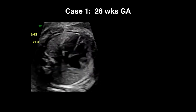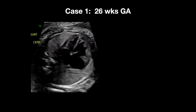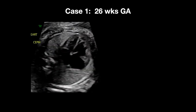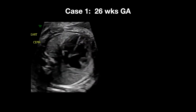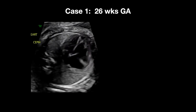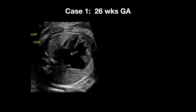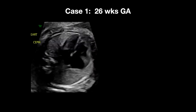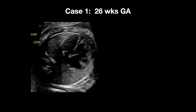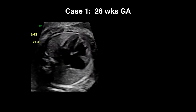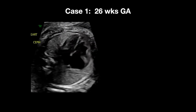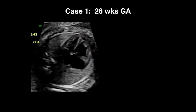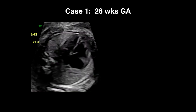Case one: at 26 weeks, a patient came in for a late anatomy scan. As you're looking at this heart, you can see that clearly — more likely a normal four-chamber view — but you start to question. Sometimes when you're scanning, it could be just your angle of insonation, how certain views look, how the right side of the heart could look big.